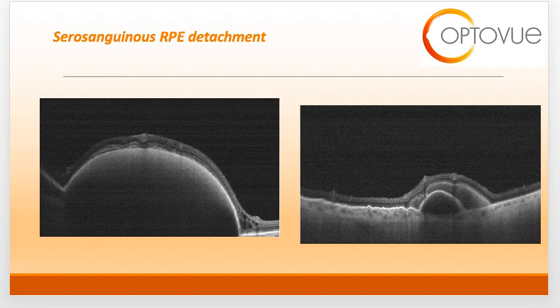This last slide shows what we call a serosanguineous RPE detachment, associated specifically with polypoidal choroidal vasculopathy. Serosanguineous RPE detachments are composed of serous fluid and blood — 'sero' means serous and 'sanguine' means blood. OCT findings typical of polypoidal choroidal vasculopathy include multiple large PEDs, as seen in these images.